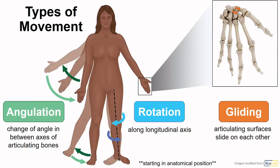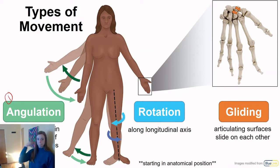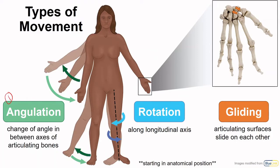There are many types of synovial joints and the structure of each allows for different types and ranges of movement. The first type of movement is angulation, which means that the angle between the two bones that are moving is changing. You can see an example of bending or flexing at the elbow, where the angle goes from 180 degrees to less than 90 degrees when fully bent.